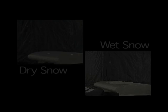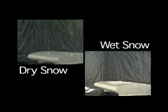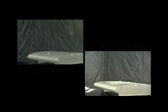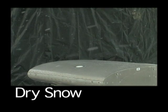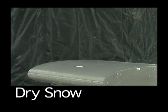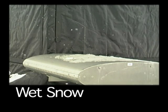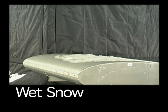When snow falls at temperatures close to 0 degrees Celsius, the snowflakes are often wet and will accumulate quickly on a surface. Wet snowflakes are typically large and contain more water than the dry snowflakes that fall at colder temperatures. Because they contain more water, wet snowflakes are easier to see through, and therefore snowfall intensity appears to be lighter. In this example, the wet snow looks lighter than the dry snow, but the wet snow and dry snow are falling at the same intensity.